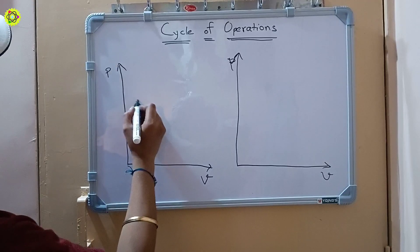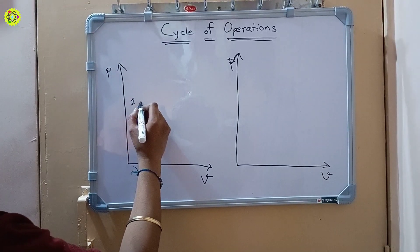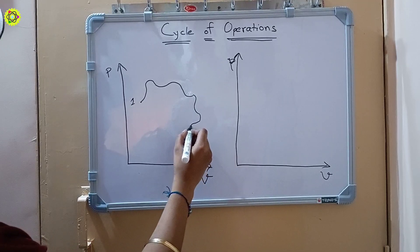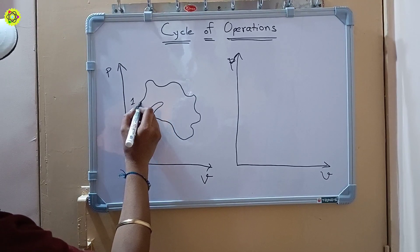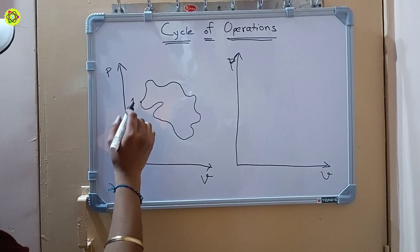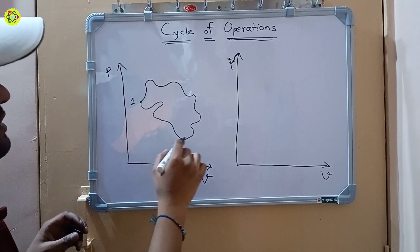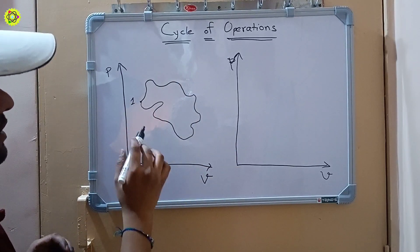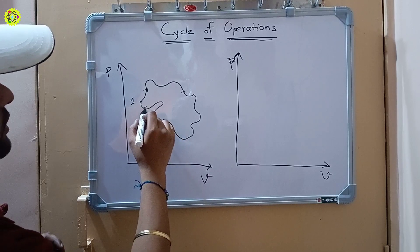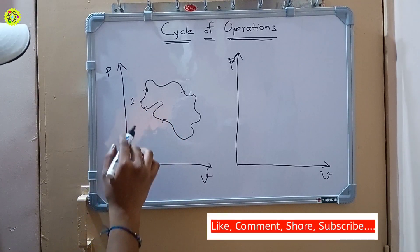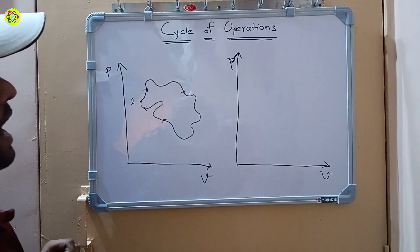Suppose this is point one, and any process starts from this point one. As the process goes on, its pressure and volume are changing. After completing this process, the end point again comes back to the initial point — the start point. This is called the cycle of operations. The process starts at point one and returns to point one, meaning its initial and final conditions are the same. This is a cycle.